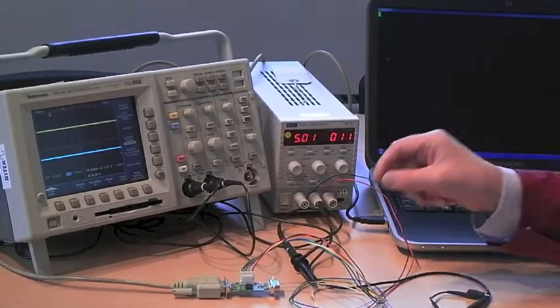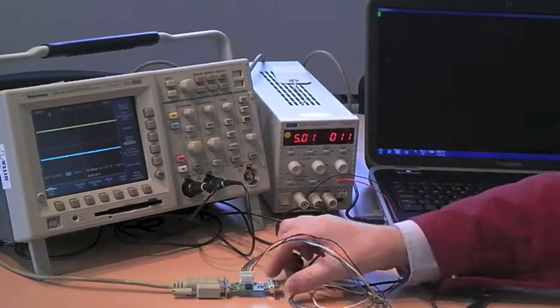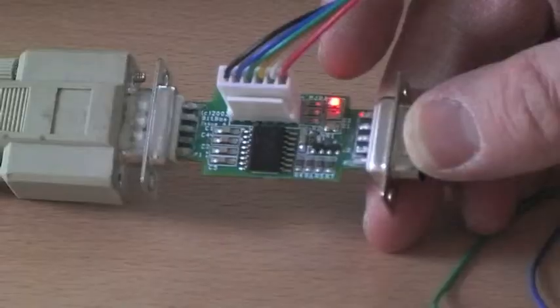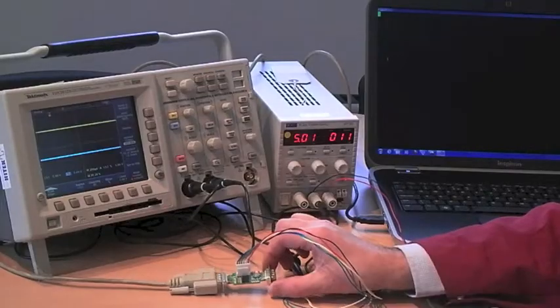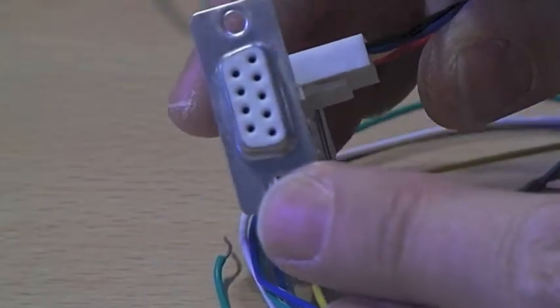So here I'm going to show you the RS232 level shifter in operation. I've got a 5V power supply connected to the level shifter with a little red light. The red light LED there is showing the power is on. There's a male connector on one end and a female connector on the other end.